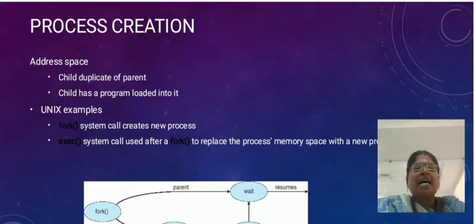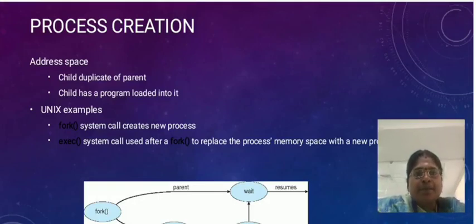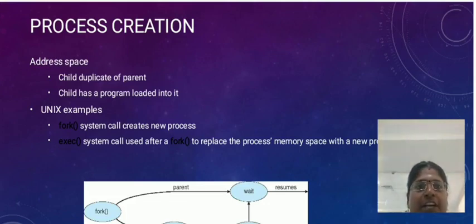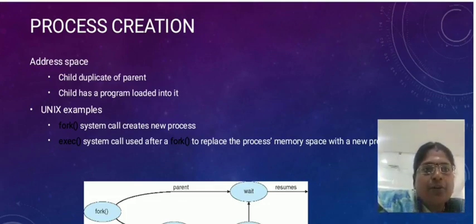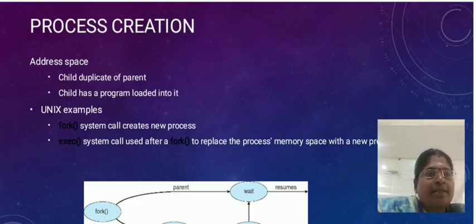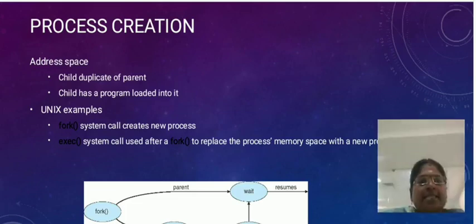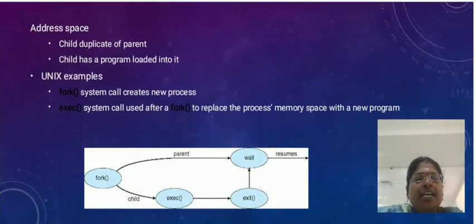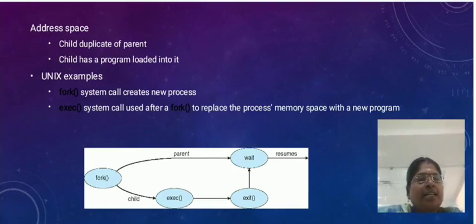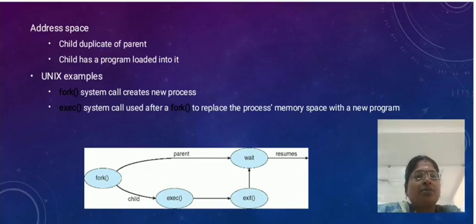Regarding address space: the child may be a duplicate of the parent, or the child has a new program loaded into it. In a Unix example, the fork() system call creates a new process, and the exec() system call after fork replaces the process memory space with a new program. Fork creates the new process and exec executes the new program.